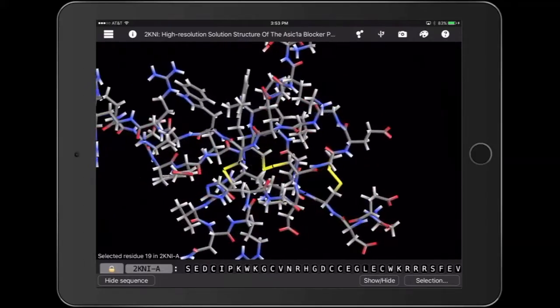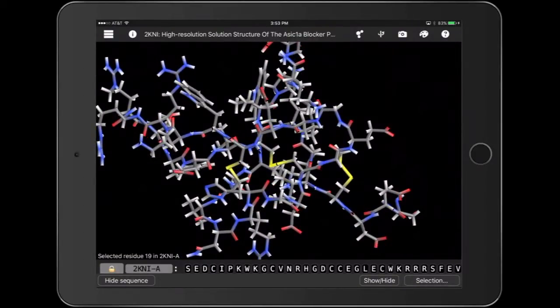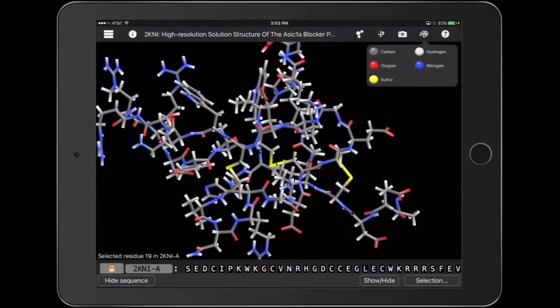Then, I'm going to open up the color key to find out that those yellow tubes in the middle are sulfur.